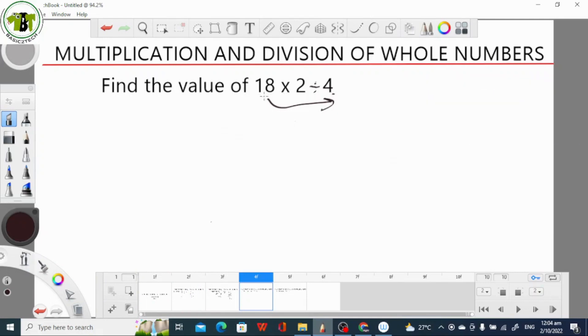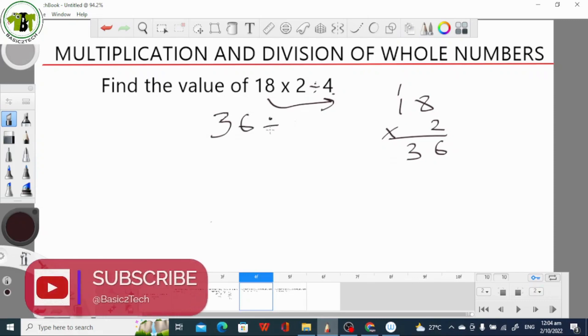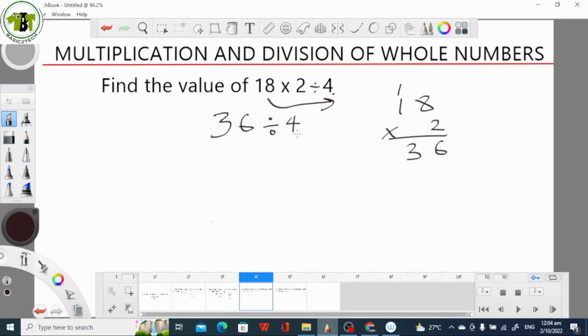The first thing we do here is to multiply 18 by 2. So 18 times 2. 8 times 2 is 16, we write down 6, then move 1 to the next column. 2 times 1 is 2, plus 1 is 3. So 18 times 2 is 36. 36 divide by 4. For us to divide by 4, we have to think of the number that we can multiply 4 to give us 36. What number can multiply 4 to give us 36? What comes to mind is 9. We know that 9 times 4 gives us 36. This means that 36 divided by 4 is 9.